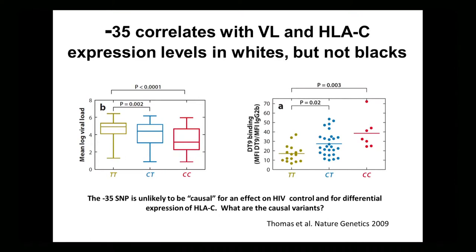We followed up to find out whether in our cohorts we also saw an effect of that SNP, which is 35 KB upstream of HLA-C, but between HLA-C and HLA-B — those two are only 150 KB apart. And indeed, we saw that there was an effect on viral load of this minus-35 SNP, where the TT associated with higher levels of viral load and CC with lower viral load. We also showed in normal donors that TT associated with low expression of HLA-C and CC with higher expression. So was there a connection between these two? Higher expression levels associating with CC also associated with lower viral load.